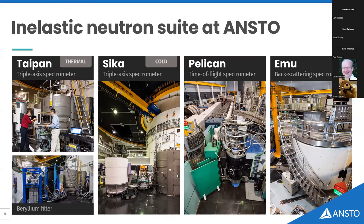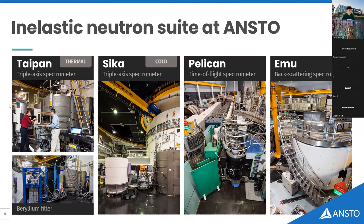Taipan is a thermal triple axis spectrometer. Sika is a cold neutron triple axis spectrometer that was actually designed, built, and is operated by the Taiwanese group from NSRRC. Pelican is a time-of-flight spectrometer with a massive detector bank in an evacuated tank. EMU is our backscattering spectrometer with huge silicon crystals all over the back wall.